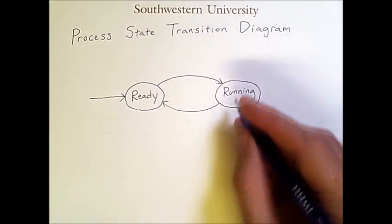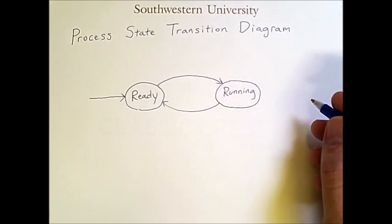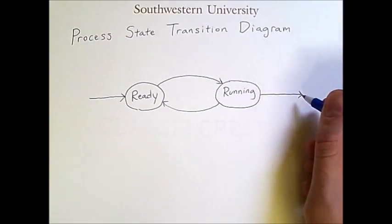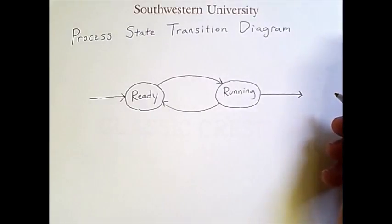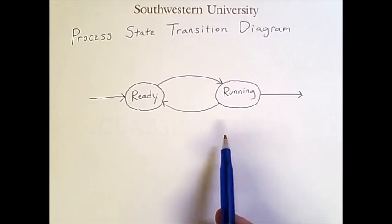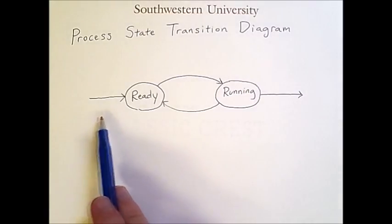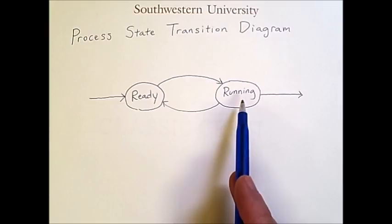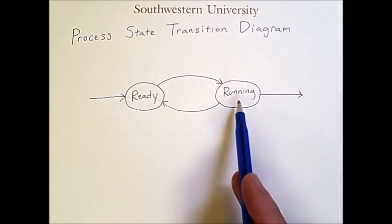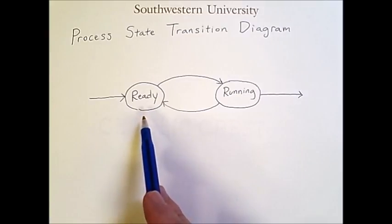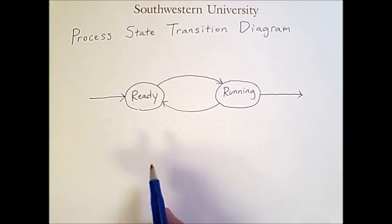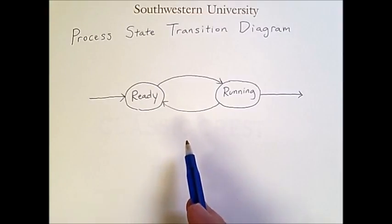After running for a while, generally a process will finish and we will terminate or exit. This is the simplest two-state model where processes come in, they're ready, they get their turn to run, and then after running they either exit the system or go back to a ready state. However, this system does not take into account things like interrupts.